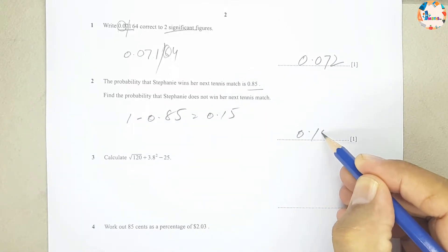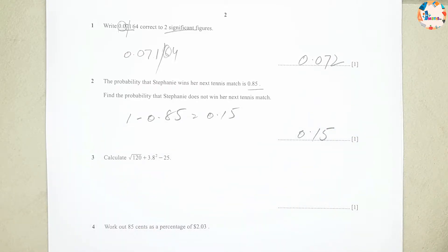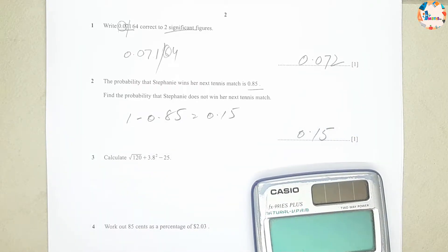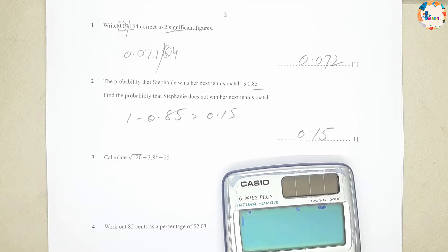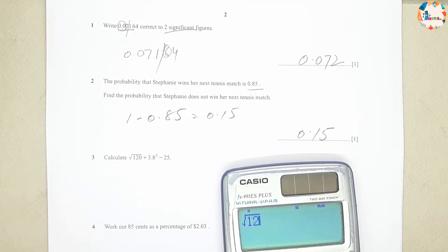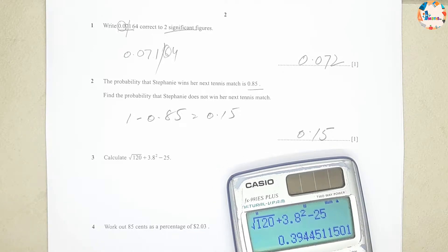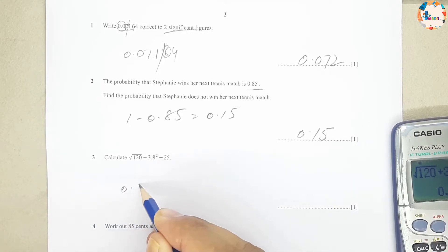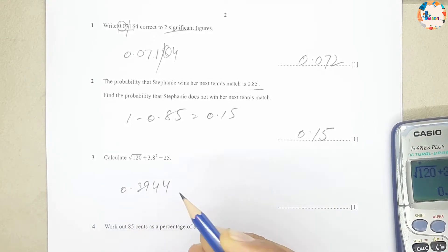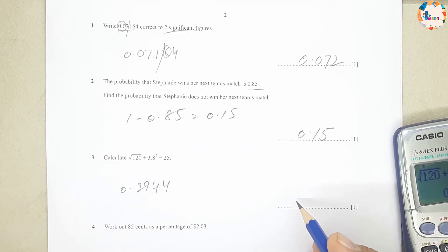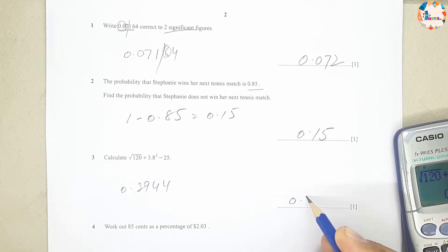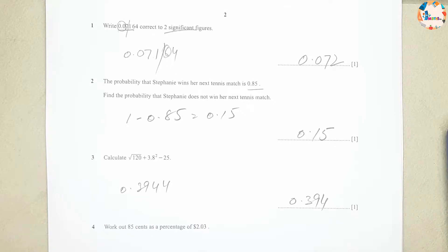Question number 3 is calculator use. We type 120 plus 3.8 squared minus 25. The answer is 0.3944, which we write to three significant figures as 0.394.